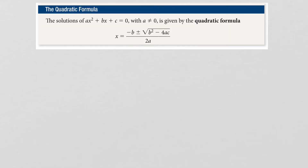Next, we talk about the quadratic formula. If you're solving a quadratic equation ax squared plus bx plus c equals 0, where a is not equal to 0, we can use the quadratic formula. It tells us that x equals negative b plus or minus the square root of b squared minus 4ac, all divided by 2a. You need to memorize this formula — it's very important.